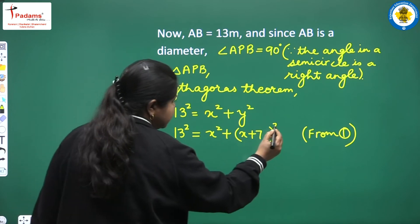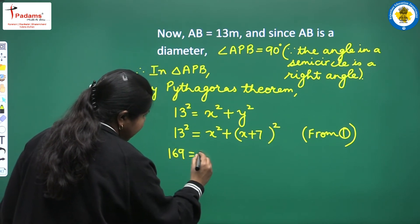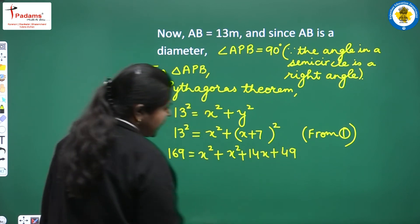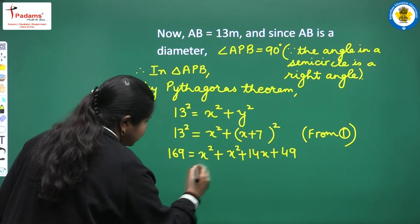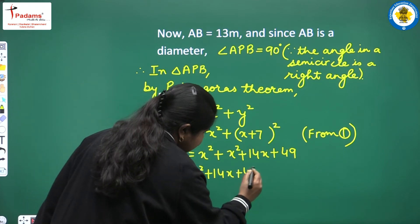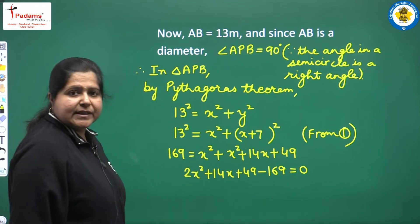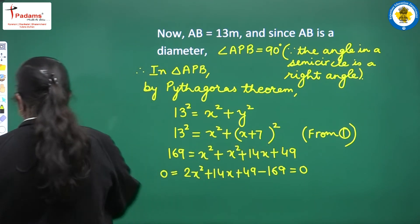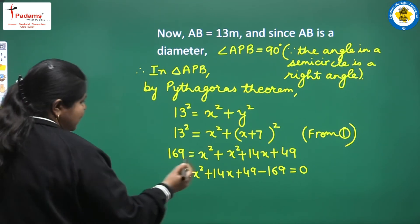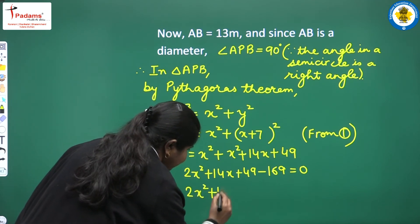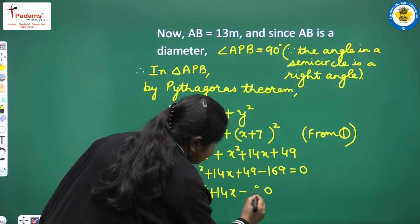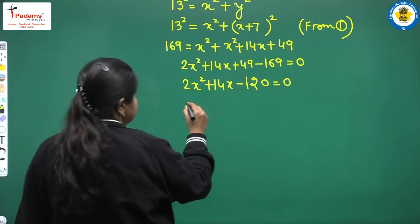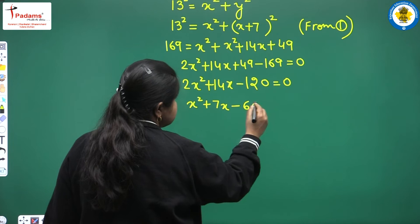Expanding: 169 = x² + x² + 14x + 49, which gives 2x² + 14x + 49 − 169 = 0. Simplifying: 2x² + 14x − 120 = 0. Since all three coefficients are divisible by 2, dividing through by 2 we get x² + 7x − 60 = 0.